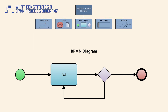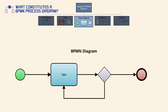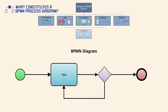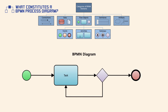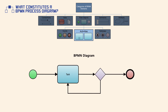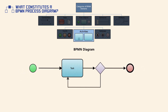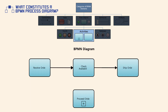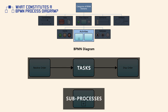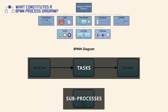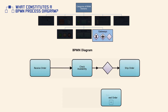The central and most complex category of BPMN elements is flow objects, which consists of activities, gateways, and events. An activity is a generic type of work that an individual or company performs. BPMN defines two major types of activity: tasks and sub-processes.